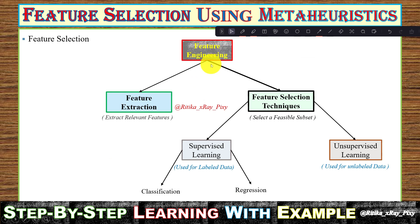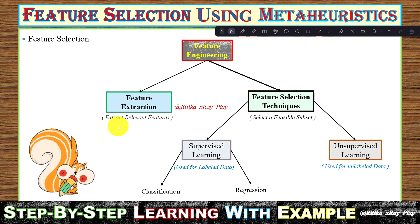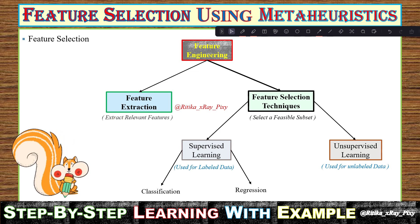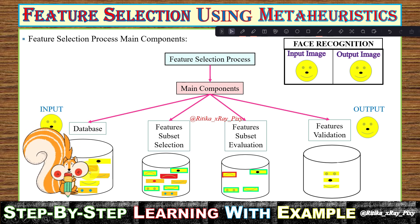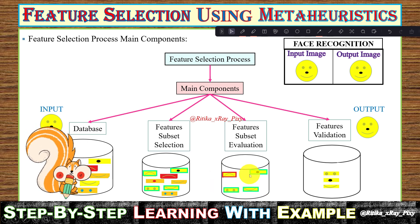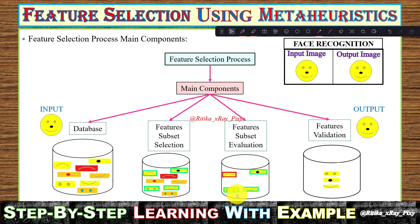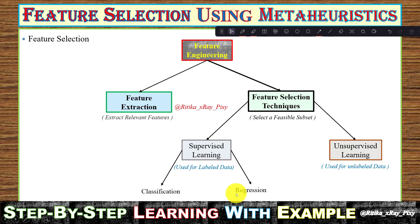Feature engineering is the pre-processing step used for feature selection and feature extraction. In feature extraction, we extract the relevant features from the feature dataset. In the feature selection process, we select a feasible subset of features.